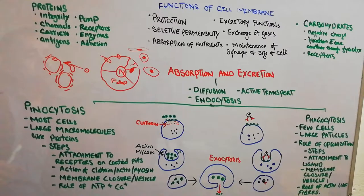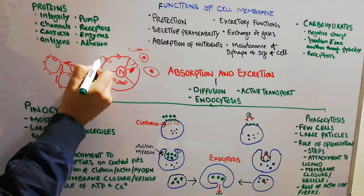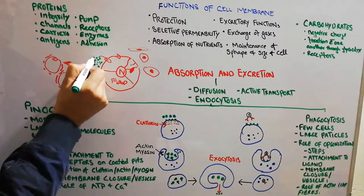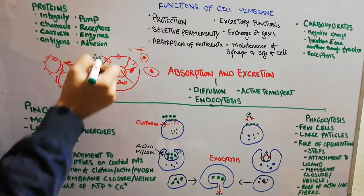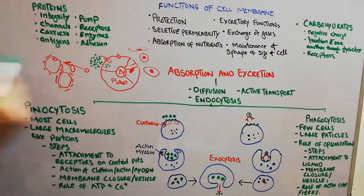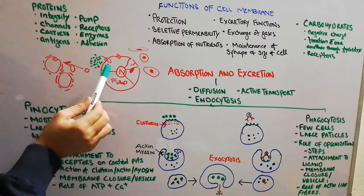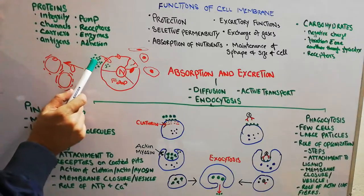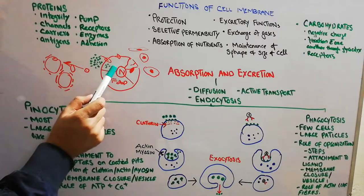In diffusion, substances enter the cell passively, without utilization of energy. For example, if a substance is present in greater quantity outside the cell and in lesser quantity inside the cell, it will pass through the cell membrane and come inside passively.